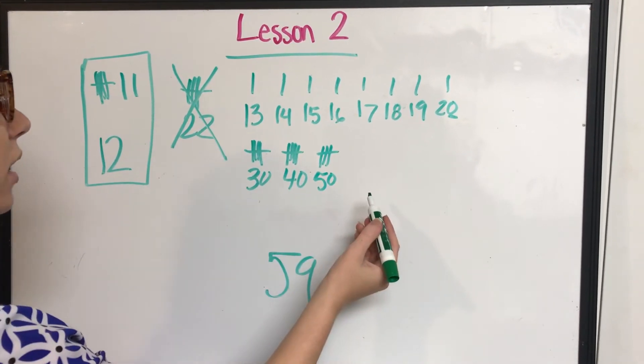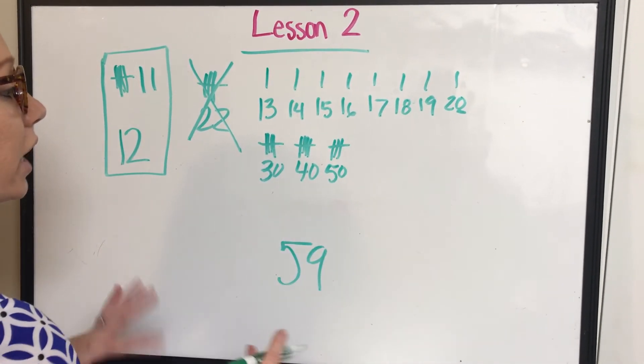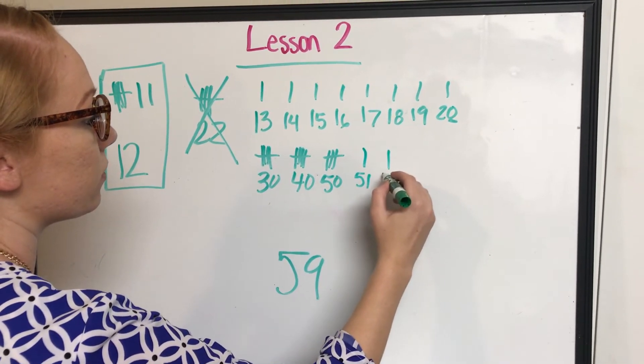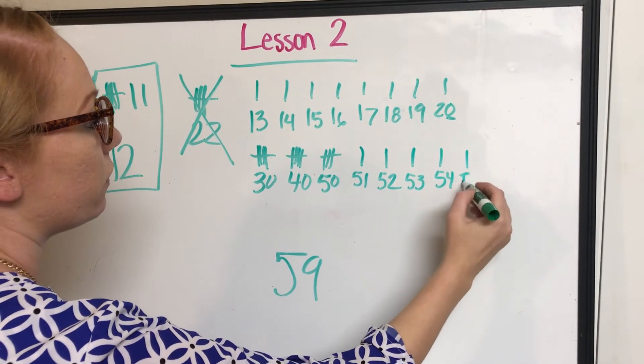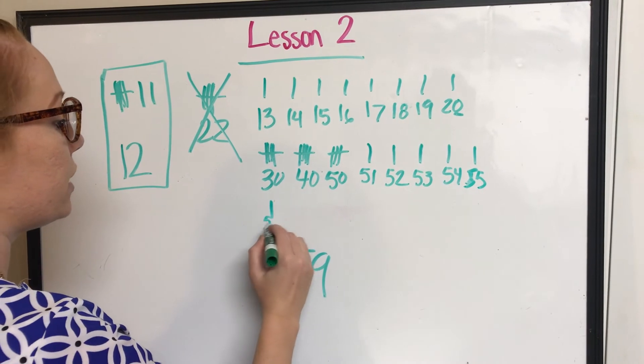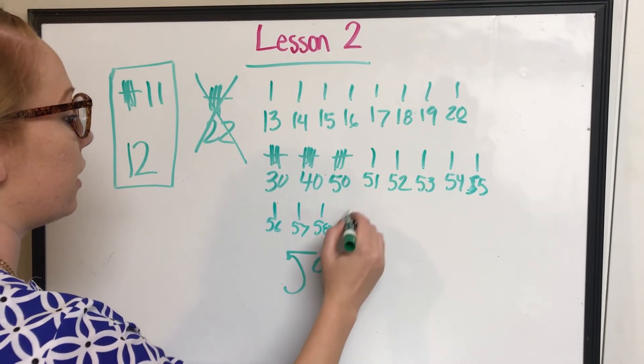Now, can I add a tens block and get to 59? No, that would get me all the way to 60. That's too far. So I'm going to have to use ones. This will be 51, 52, 53, 54, 55, 56, 57, 58, and my 59.